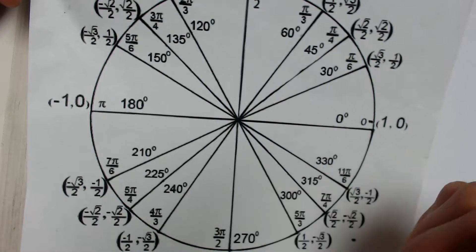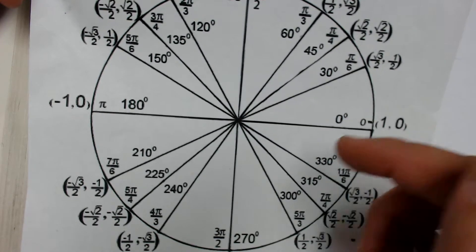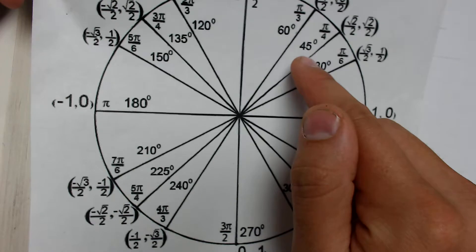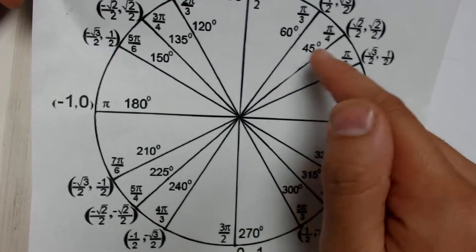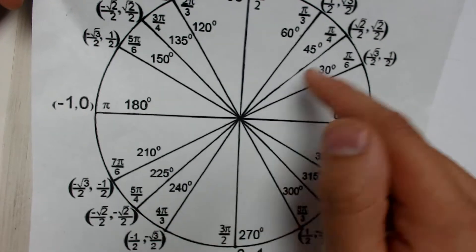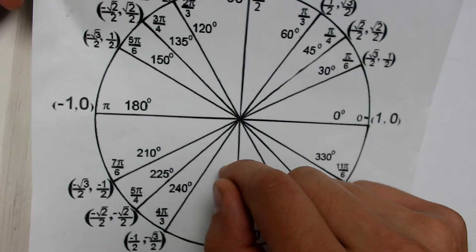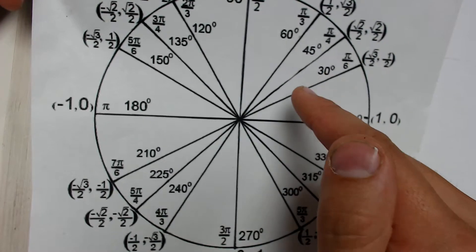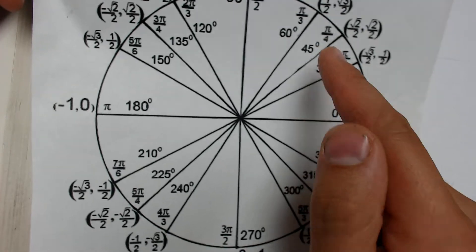And another way you could find this quickly is by using your quadrant phrase, all students take calculus: all positive, tangent positive. We would know to look here and here. And then 45 degree angles are the only ones where you'll get a tangent of 1. So we could use reference triangles very quickly that way to figure out that our two angles are 45 and 225.